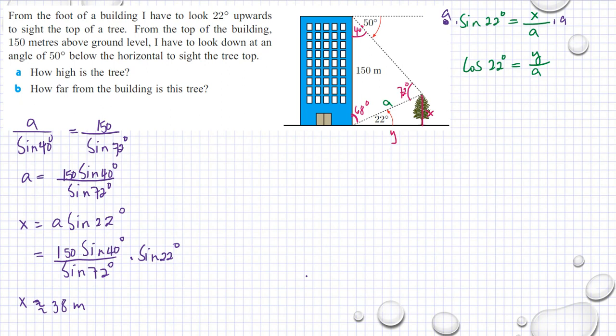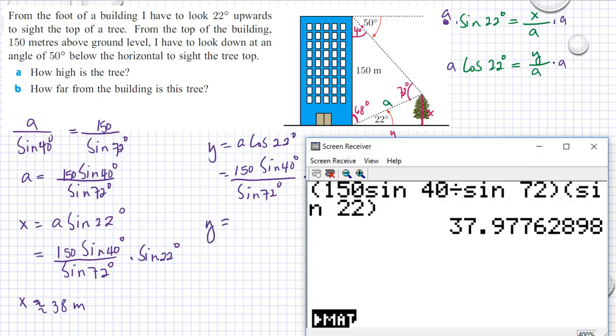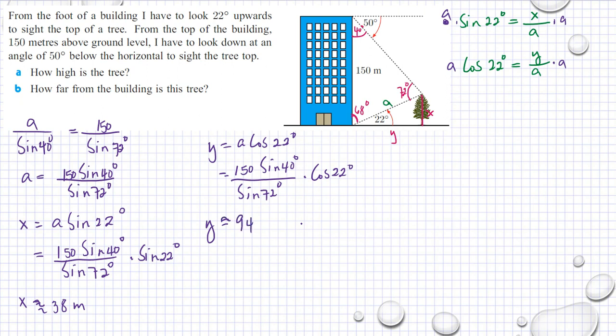And how far from the building is that tree? If we multiply both sides of the equation by A here also, then we have Y is equal to A cosine 22 degrees. So we have 150 meters sine 40 degrees divided by sine 72 degrees multiplied by cosine 22 degrees. So our Y now, if I can only change sine with a cosine, then I have now almost 94 meters.